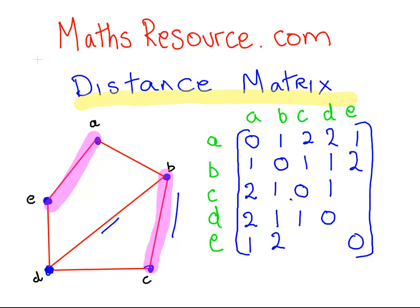C to E is 2. There and there. 2 and 2. And finally, D to E, they're connected straight to each other. So, that is the distance matrix for that one.